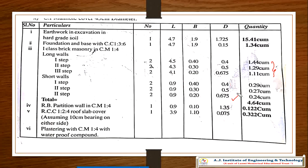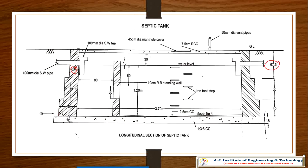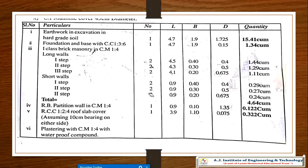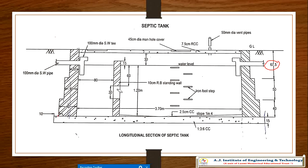Next item is RBC partition wall in cement mortar 1:6. A partition wall is provided here with a total length of 1.20 m.